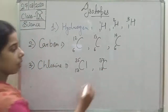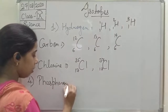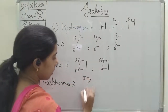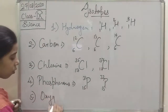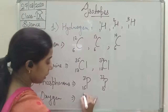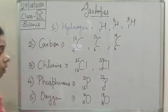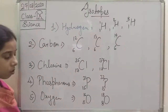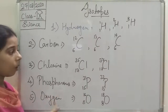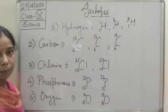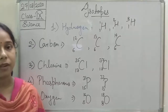Phosphorus also has isotopes: phosphorus-31 and phosphorus-32. Oxygen also exists in nature as oxygen-16 and oxygen-18, with atomic number 8. There are many isotopes. They all have the same atomic number but different mass number. In the next class, we will discuss the different properties and applications of isotopes.